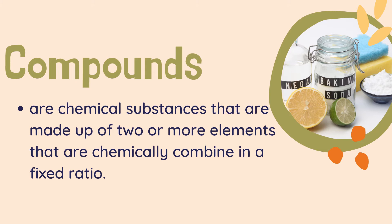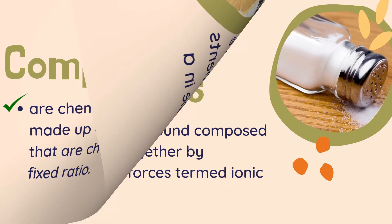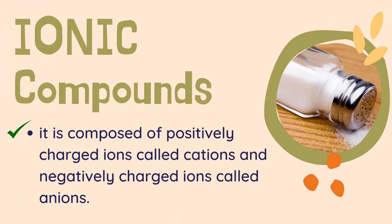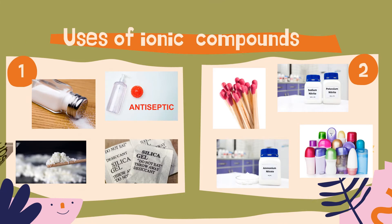There are two common types of compounds based on chemical bonding characteristics: ionic compounds and covalent compounds. Compounds are chemical substances that are made up of two or more elements chemically combined in a fixed ratio. An ionic compound is a chemical compound composed of ions held together by electrostatic force, termed ionic bonding. It is composed of positively charged ions called cations and negatively charged ions called anions. Here are some examples of common ionic compounds and their uses.